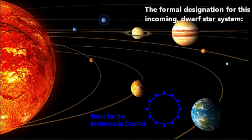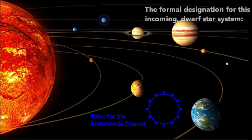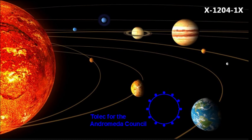Now the formal designation for this new incoming dwarf star system is called by the Andromeda Council scientists X-1204-1X. It is a designation, not a name.